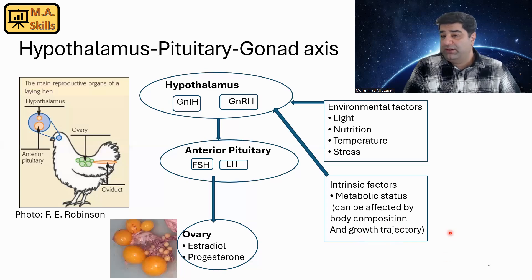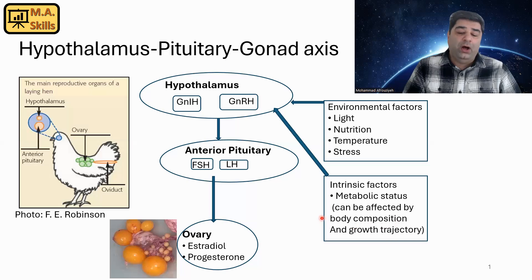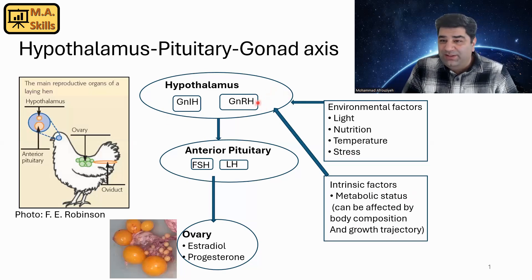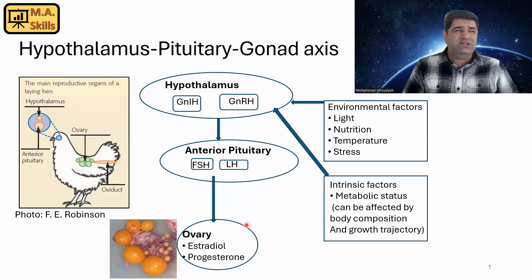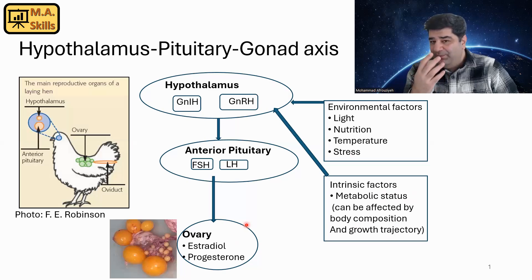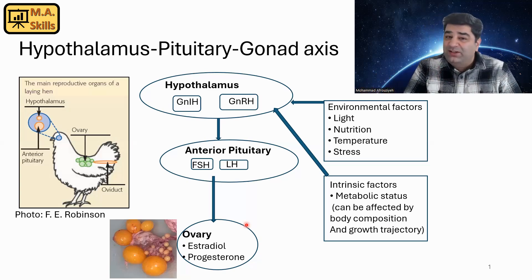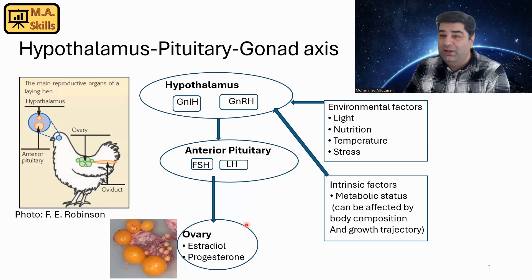If we have a good growth trajectory — a target growth curve for our birds — then we will have an optimum body composition and optimum metabolic status that favor gas pedal activation of the HPG axis. That's why I really want you to look at reproduction and laying performance from a physiology standpoint and understand how our management can affect the birds' physiology, performance, and ultimately our profitability.